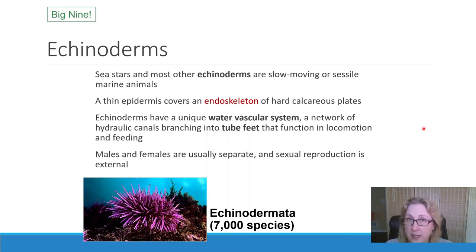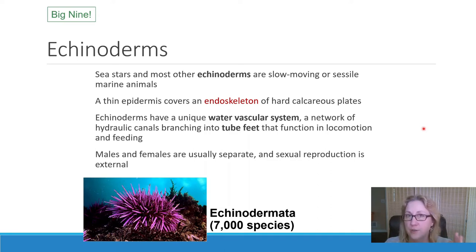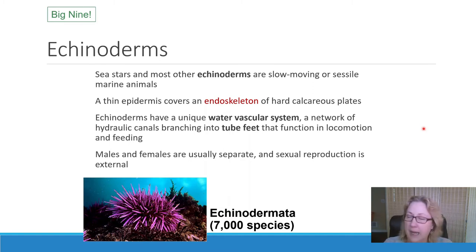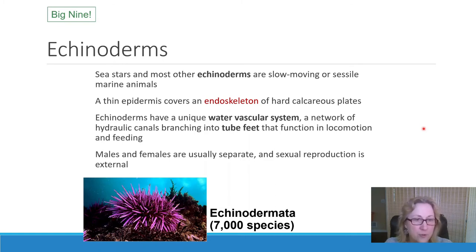We share a lot of traits with echinoderms, given that they're in the deuterostomes with us. We share deuterostomic development with echinoderms, and we also both have an internal endoskeleton. Echinoderms have an internal endoskeleton made of collagen with calcium as a hardening agent, just like we do — though after that, every comparison goes off the rails. Most echinoderms as adults appear radially symmetric, although it's not true radial symmetry. Usually echinoderms are separate genders, males and females, not hermaphroditic.